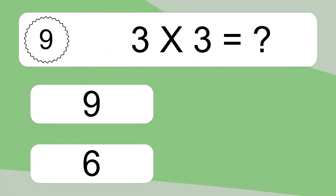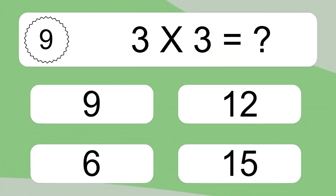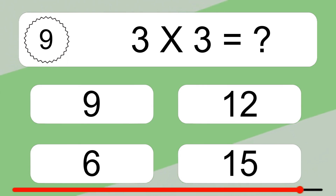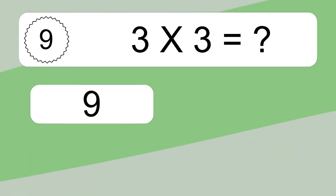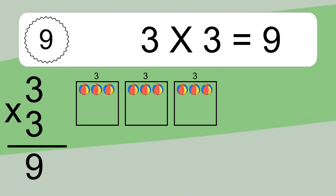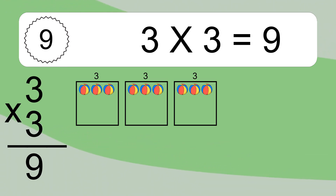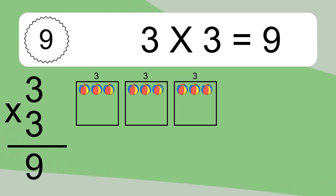3 times 3 equals what? 3 times 3 equals 9. We have 3 boxes, and each box has 3 colorful balls inside. If you count all the balls in all the boxes together, you will have 3 times 3 balls. This equals 9 balls.